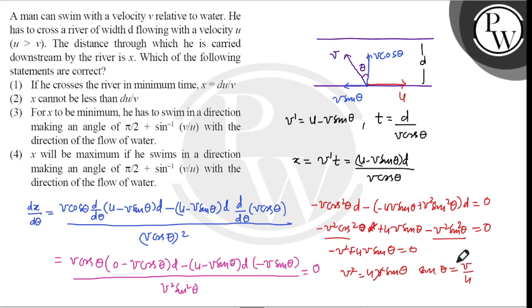So X will be minimum when this angle is pi by 2 plus sin inverse V by U. So option 3 is correct. X will be maximum if he swims in the direction making an angle of pi by 2 plus sin inverse V by U, this option is wrong, we calculated for minimum.